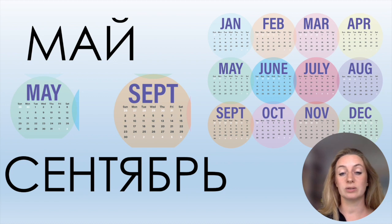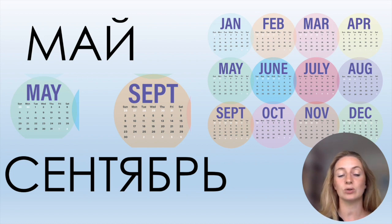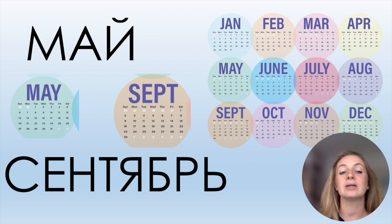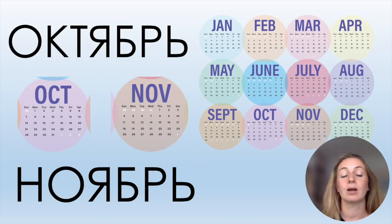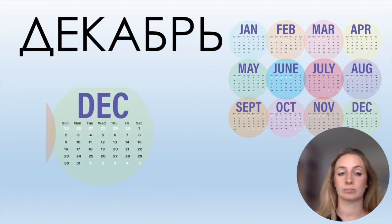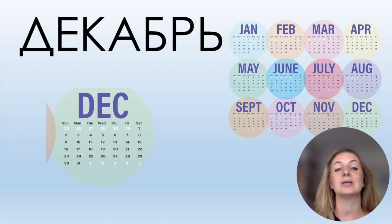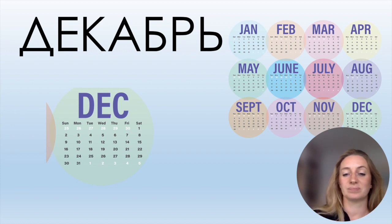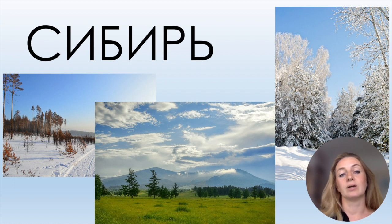I will give you in this video more months. МАЙ — with Й, which we introduced in the previous video. And then several months with letter Б: СЕНТЯБРЬ, ОКТЯБРЬ — the first О we pronounce like А, so ОКТЯБРЬ — НОЯБРЬ, and ДЕКАБРЬ, the last month of the year.